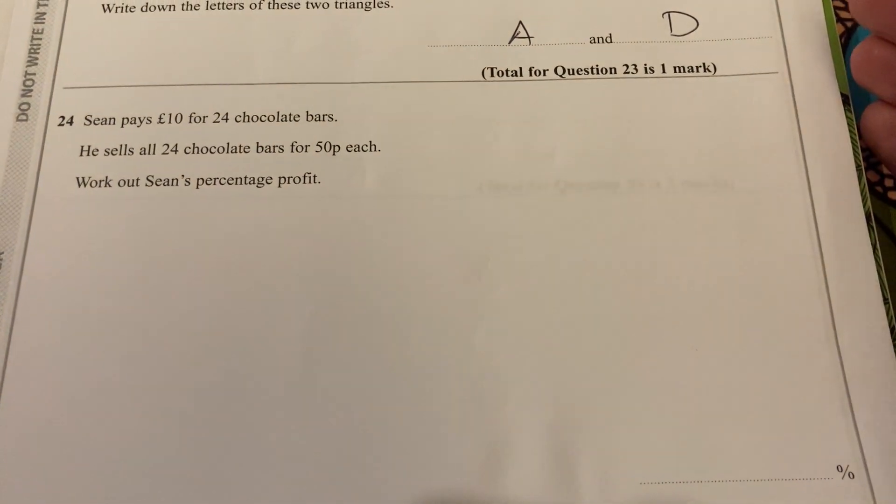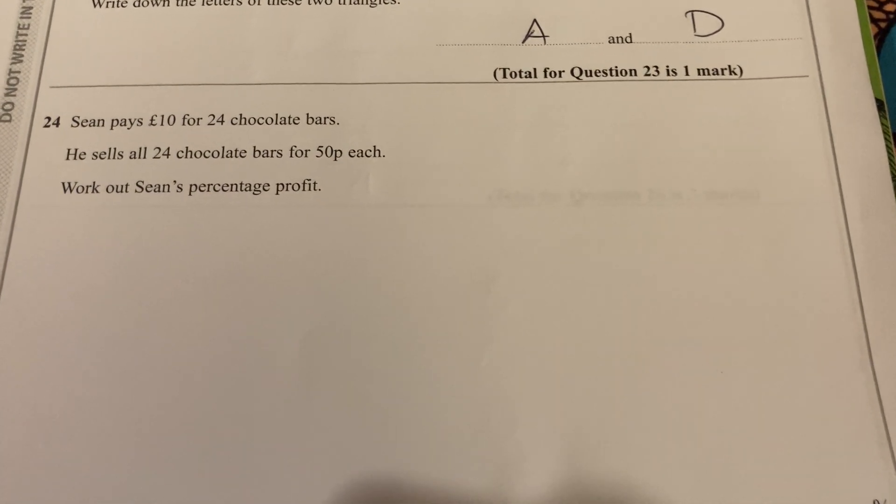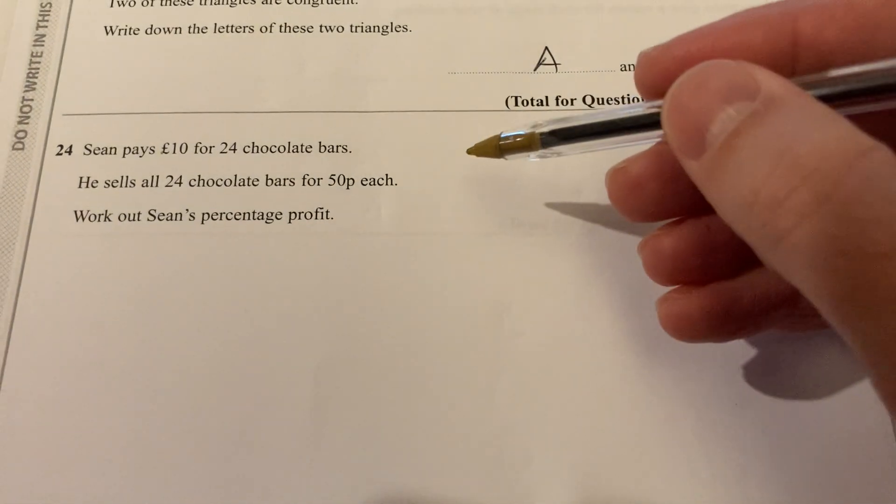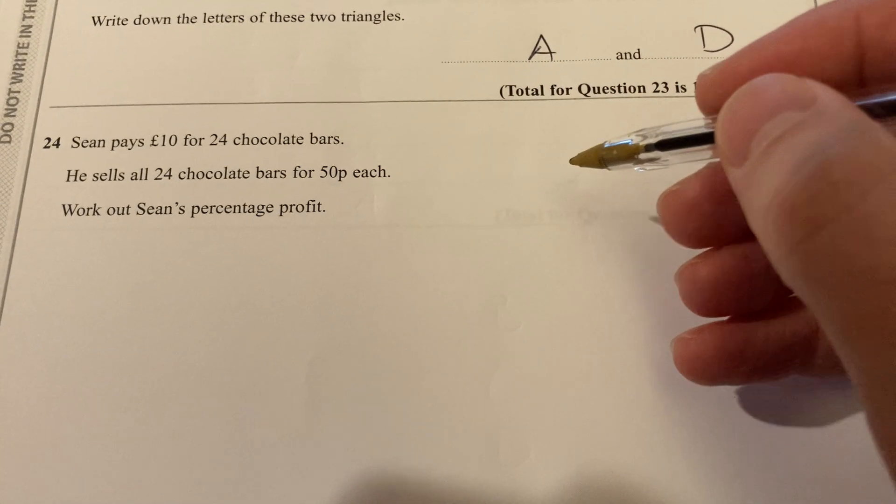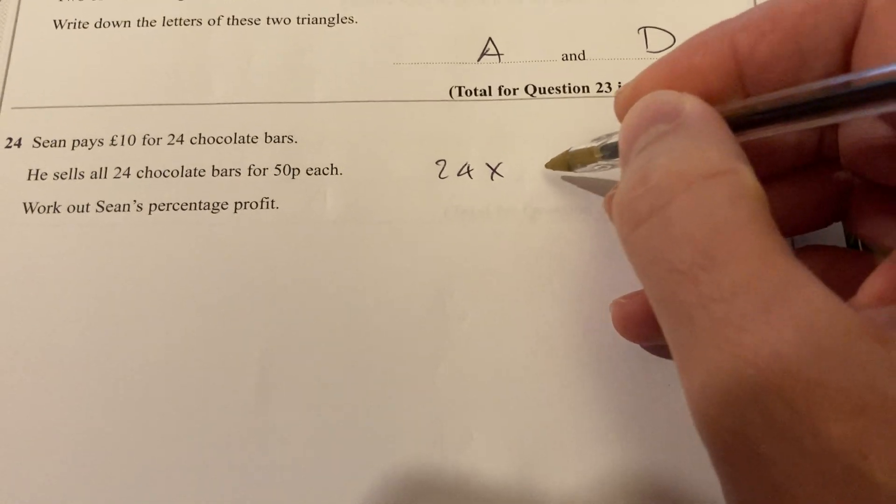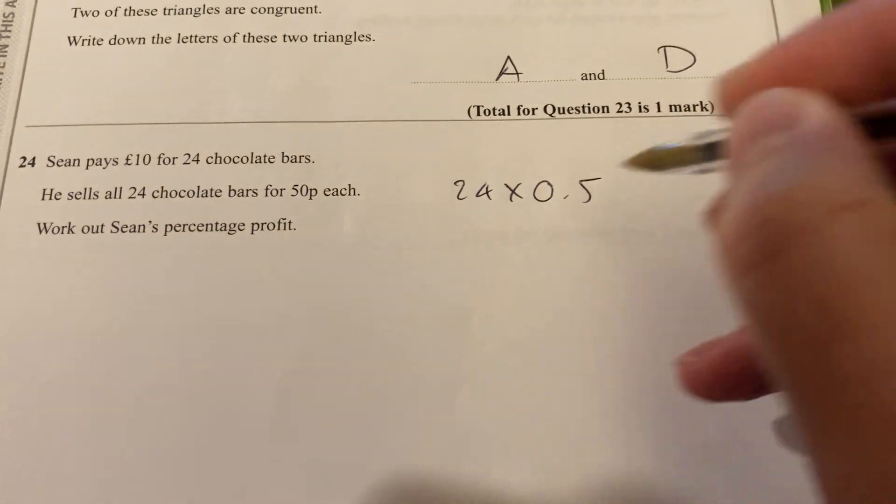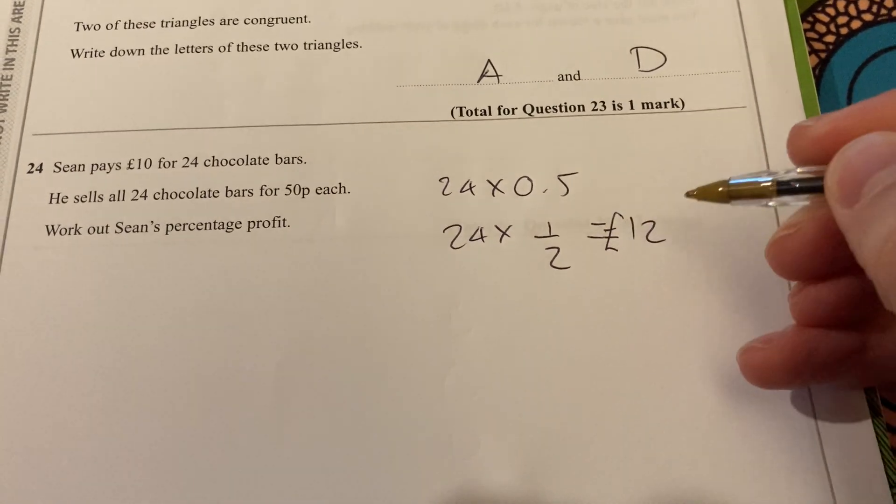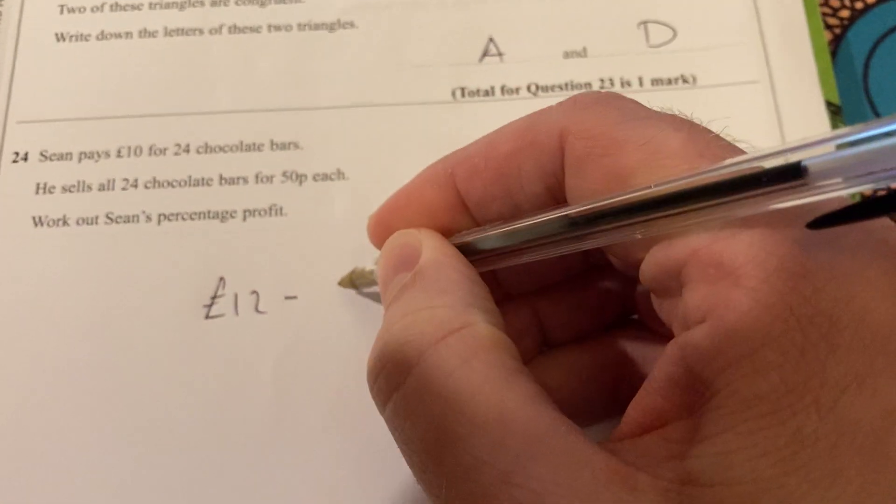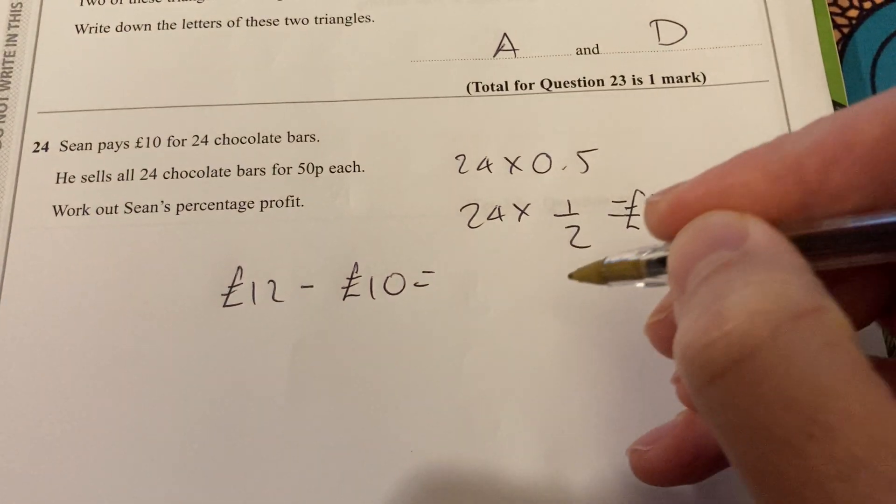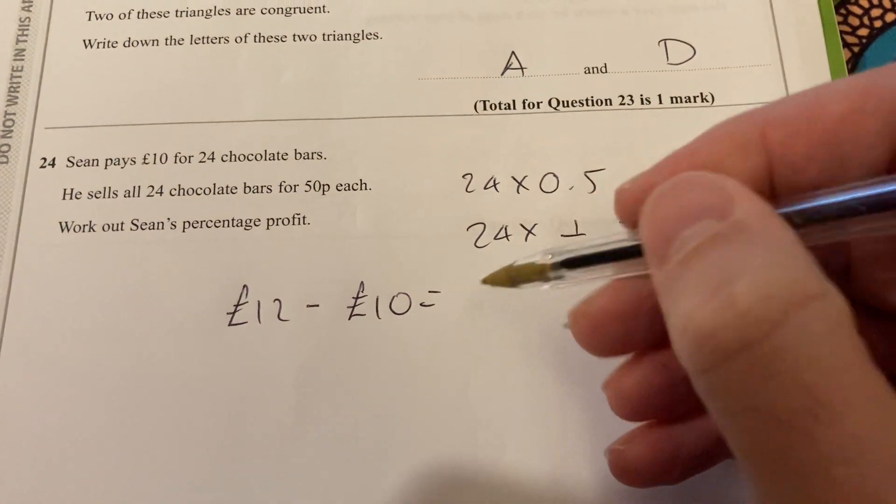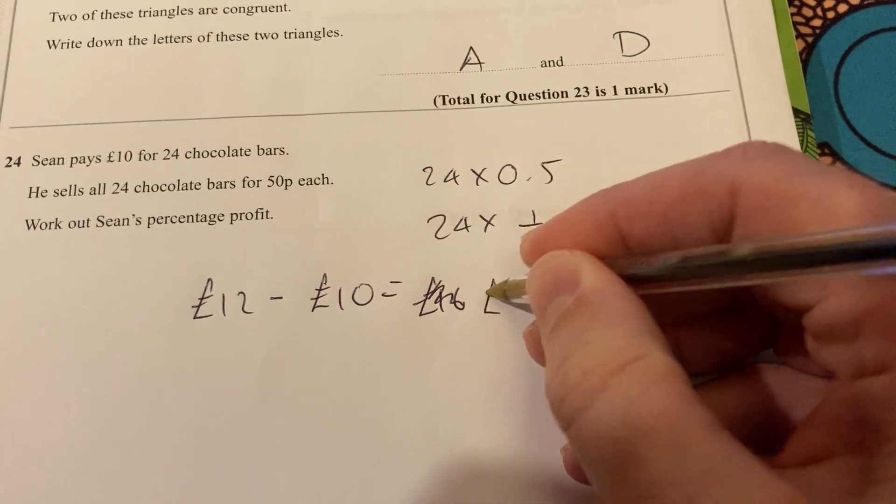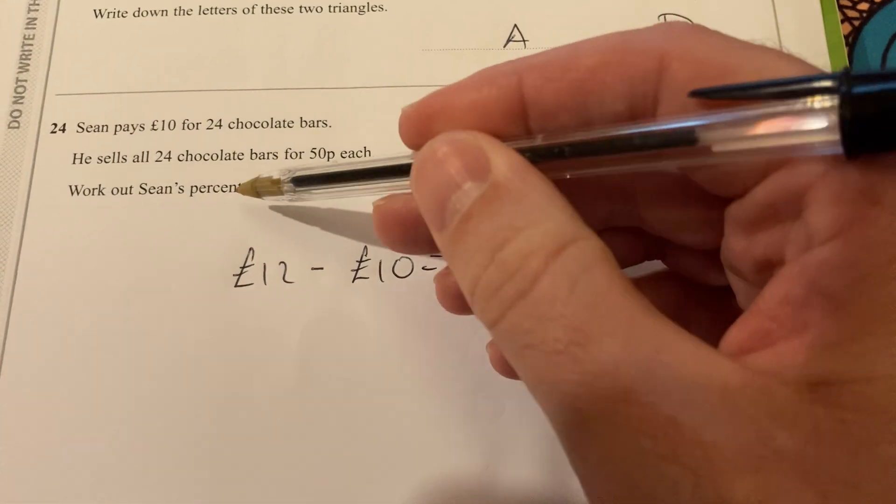Okay, question 24. Sean pays £10 for 24 chocolate bars. He sells all 24 chocolate bars for 50 pence each. Work out Sean's percentage profit. So he could work out the price per chocolate bar, but I'd rather work out the total. So I'm going to do 24 times 50 pence, which is half a pound, so 0.5. In fact, I might find it easier to do that as a fraction. 24 times a half is 12. So he's earned £12. So the difference there is 12 minus 10.